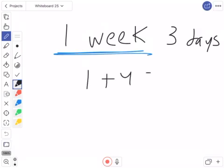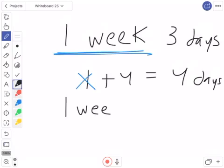Right here, it just says one week. Sometimes some people might think, well, it's 1 plus 4 equals 4 days. Well, that doesn't work because one week is not one day. I have to remember that, oh yeah, that's right, one week equals 7 days.